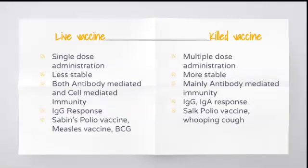Live vaccine stimulates IgG response whereas killed vaccine stimulates IgG and IgA response. Examples of live vaccines are Sabin's polio vaccine, measles vaccine, and BCG. Examples of killed vaccines are Salk polio and whooping cough vaccine.